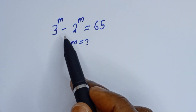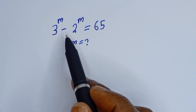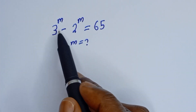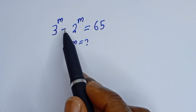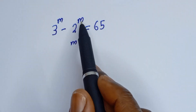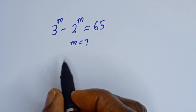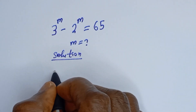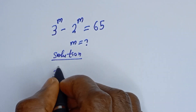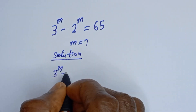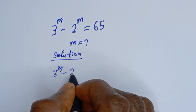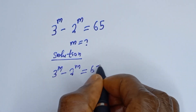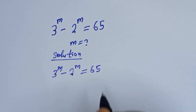Hello. How to solve for m from this given math Olympiad equation? 3 to the power of m minus 2 to the power of m is equal to 65.